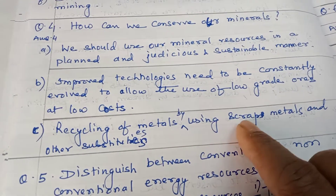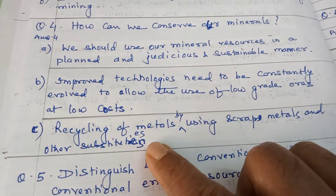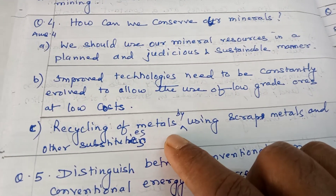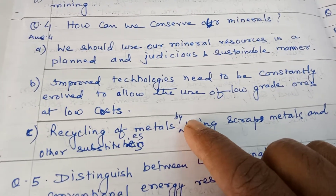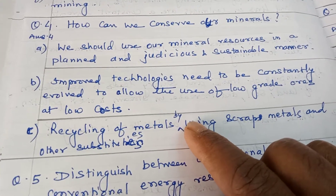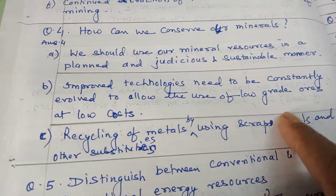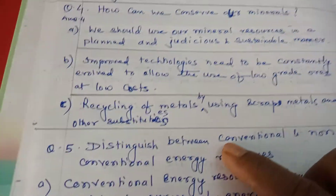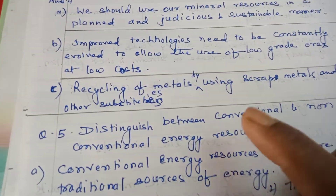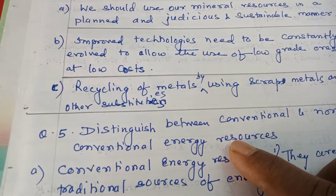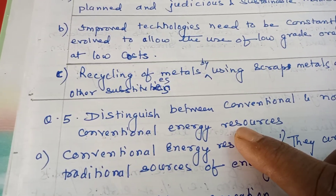Recycling of metals by using scrap metals and other substitutes is important. Vehicles damaged due to accidents are considered scrap metals and should be recycled so that fresh iron ore is consumed less for the production of steel.